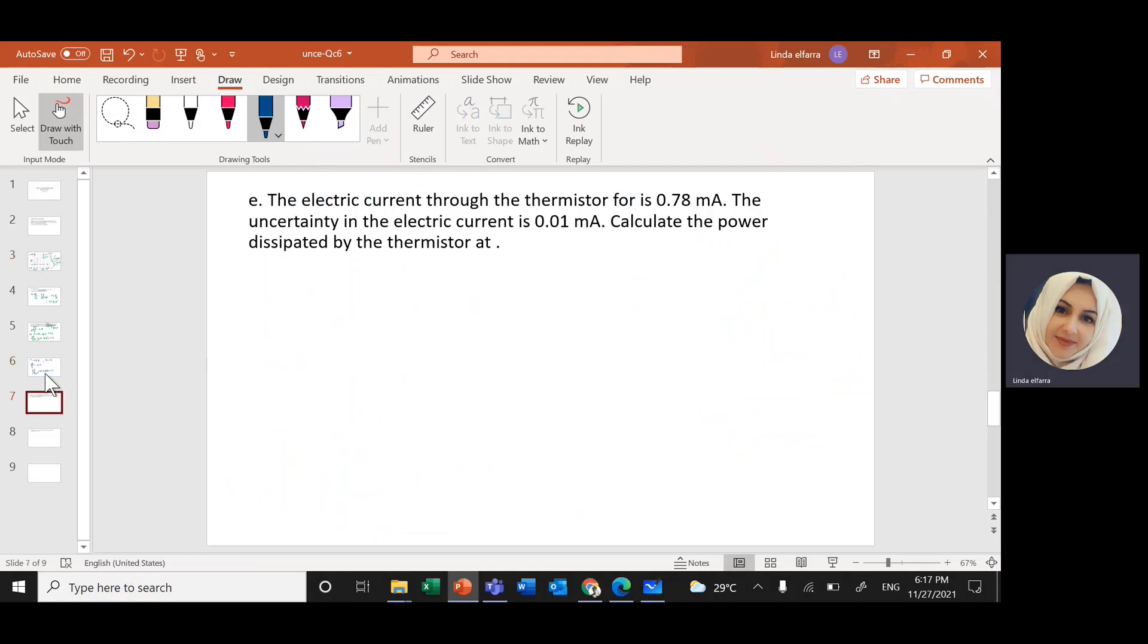Another question. You have the electric current through the thermistor is 0.78 milliamp. So this is I. I is 0.78 milliamp, which means times 10 to the power negative 3 amp. The uncertainty in the current is 0.01 milliamp. So delta I is 0.01 milliamp. Calculate the power dissipated by the thermistor. Now with power, this is going to study it in topic five.